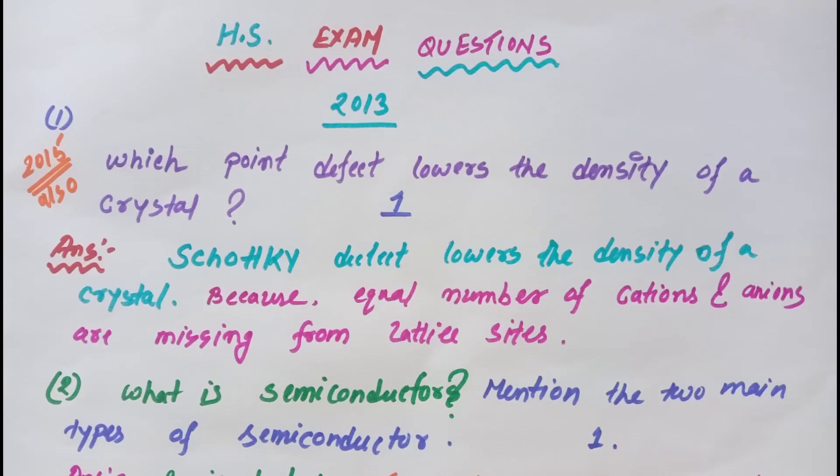Hello students, today we will discuss some previous year Class 12 final exam questions. The first question is from 2013: What is Schottky defect? Which point defect lowers the density of a crystal? This question is also from 2015.